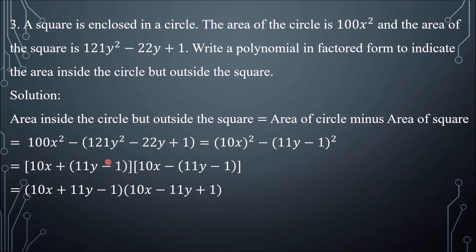Simplifying the second factor: 10x plus 11y minus 1 times 10x minus 11y plus 1 — distributing the negative sign gives negative 11y and positive 1. So that is the factored form of the polynomial representing the area inside the circle but outside the square.